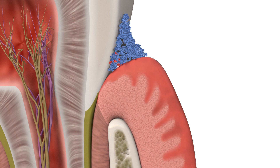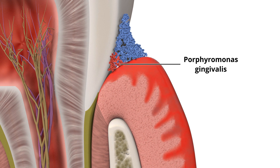a change can occur in the composition of the dental plaque, which allows certain disease-associated bacteria or pathogens to establish themselves in the tissues surrounding the teeth. The bacterium Porphyromonas gingivalis,